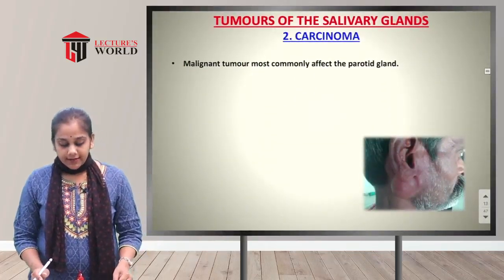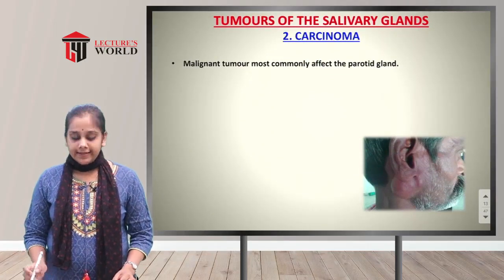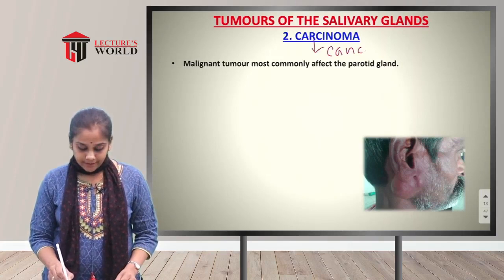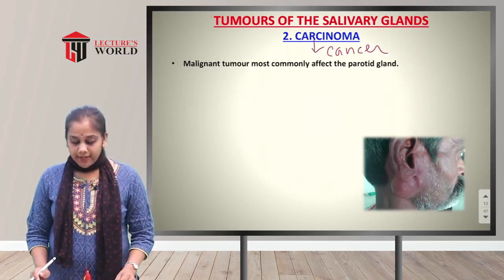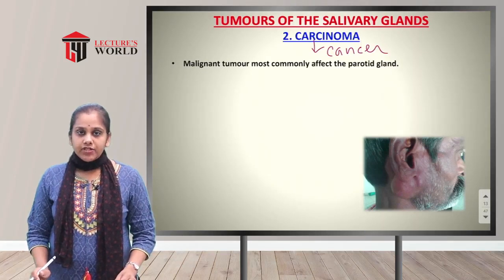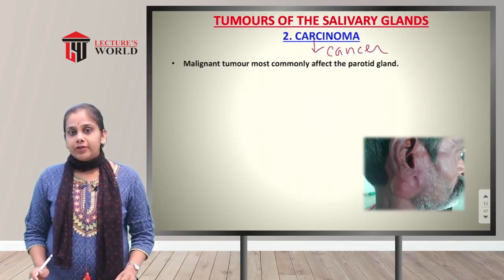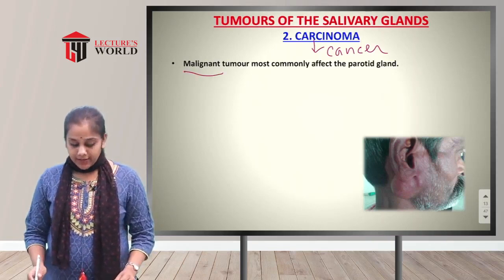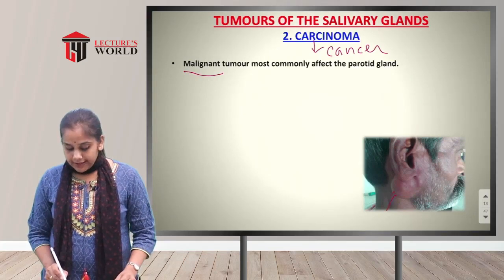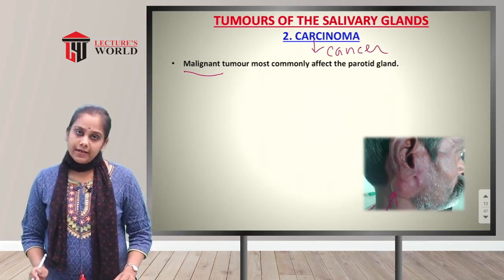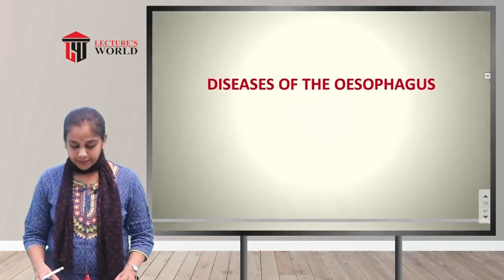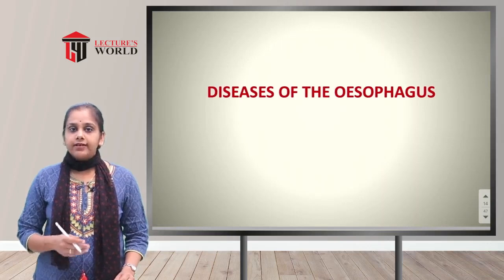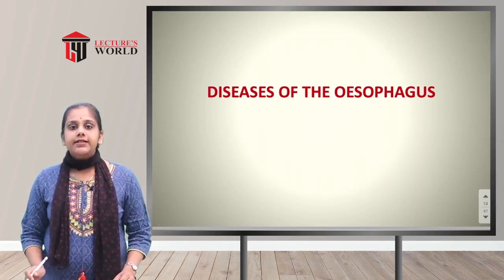The second salivary gland tumor is carcinoma — a malignant, cancerous tumor. It most commonly affects the parotid gland. Malignant tumors develop in the parotid gland, and this represents carcinoma of the parotid gland. This completes the disorders of the oral cavity and pharynx.